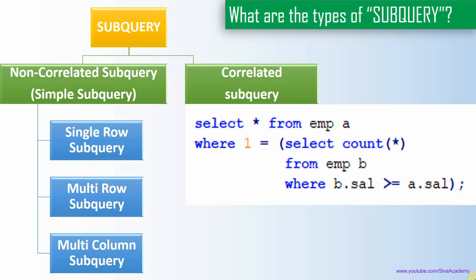The main difference between a simple subquery and a correlated subquery is that in a simple subquery, the inner query gets evaluated and executed first, and its result is used as input to the outer query. Whereas in a correlated subquery, the inner query is dependent on the outer query. Both the outer and inner queries execute side by side because the inner query uses a column from the outer query. Here is an example of a correlated subquery.